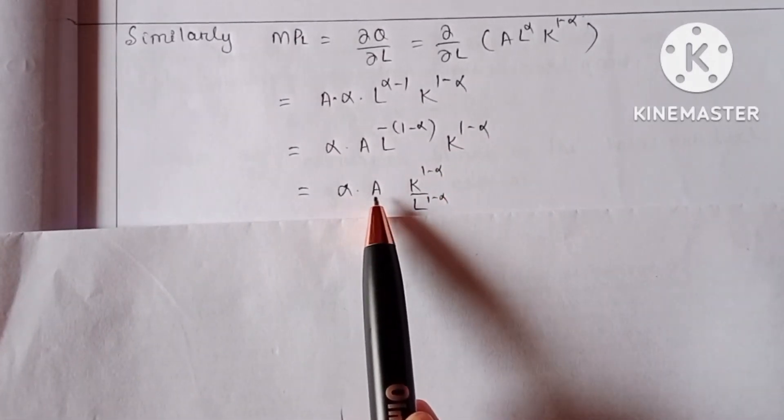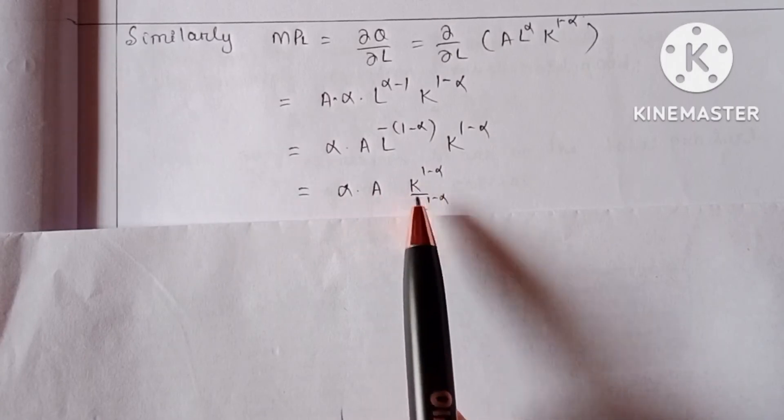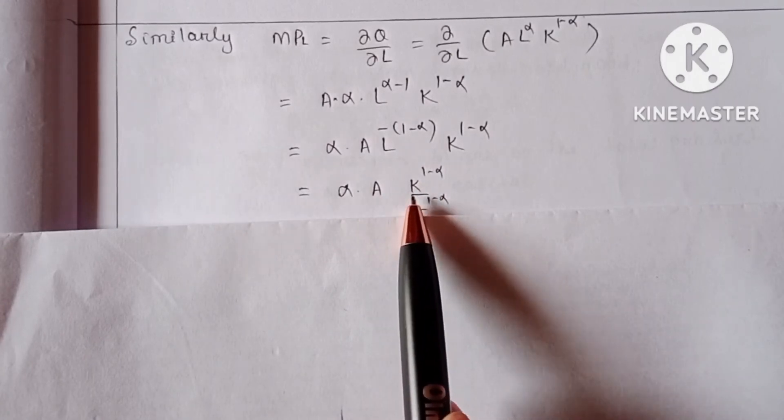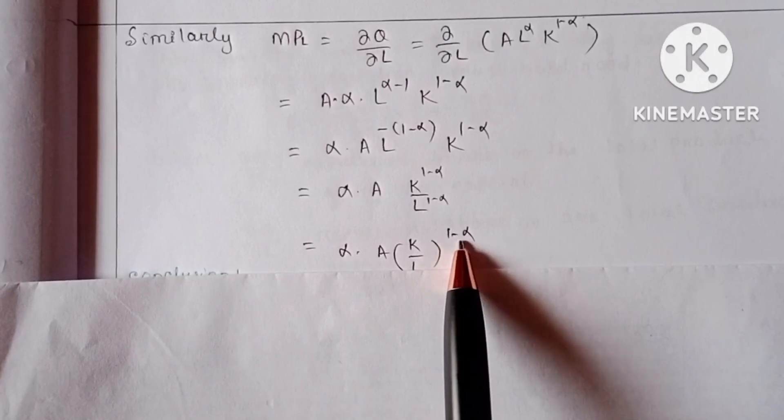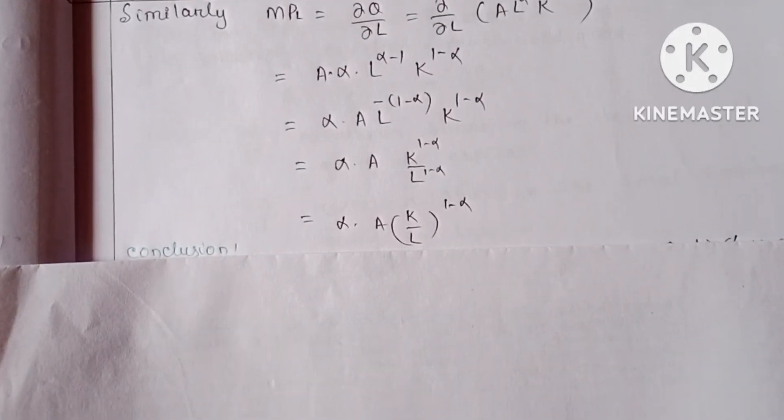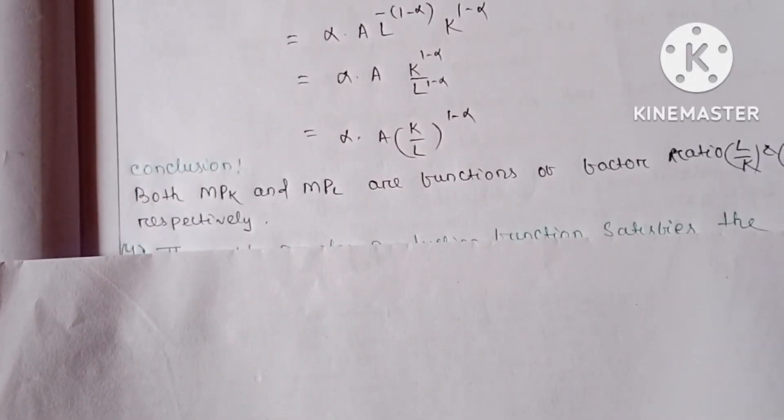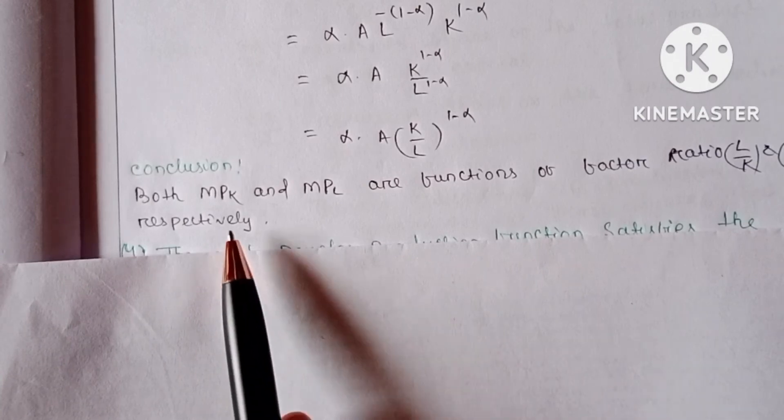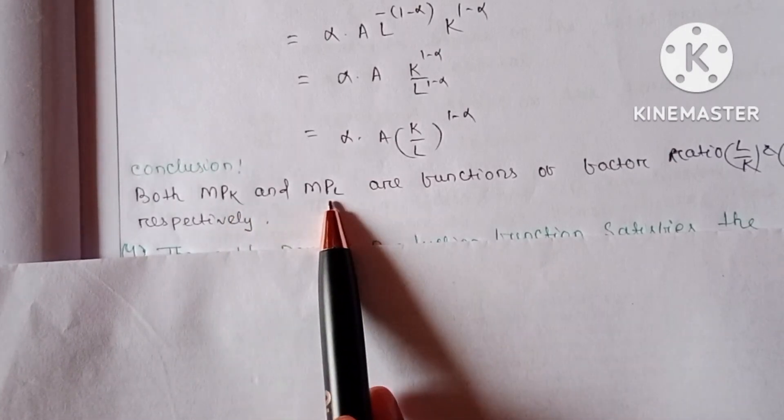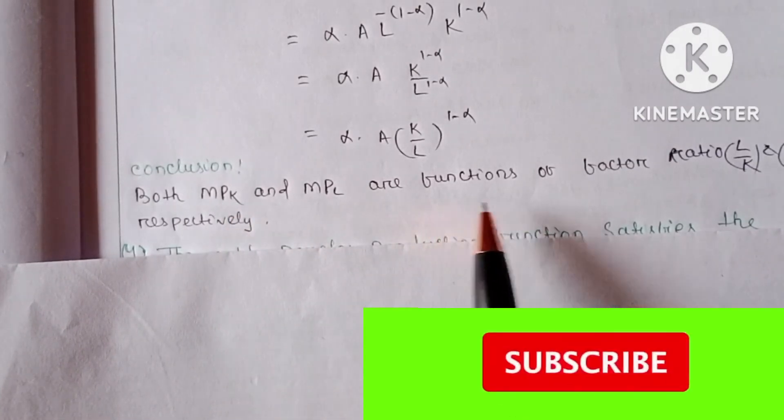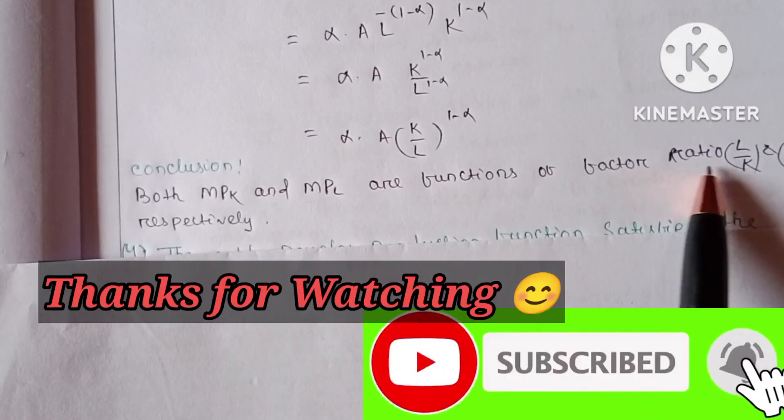This becomes α·A·(K/L)^(1-α). The conclusion is both marginal productivity of capital and marginal productivity of labor are functions of factor ratio, that means L/K and K/L respectively.